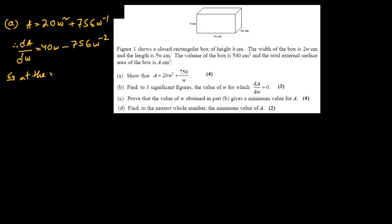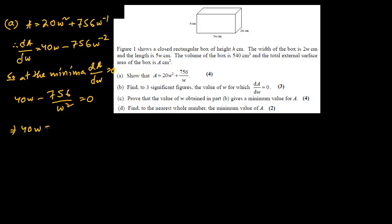At the minima, the gradient is 0, so dA/dW = 0, and we need to find W to 3 significant figures. This gives 40W − 756/W² = 0. It's a good idea to bring it downstairs, so 40W = 756/W². Therefore, W × W² = W³ = 756/40.